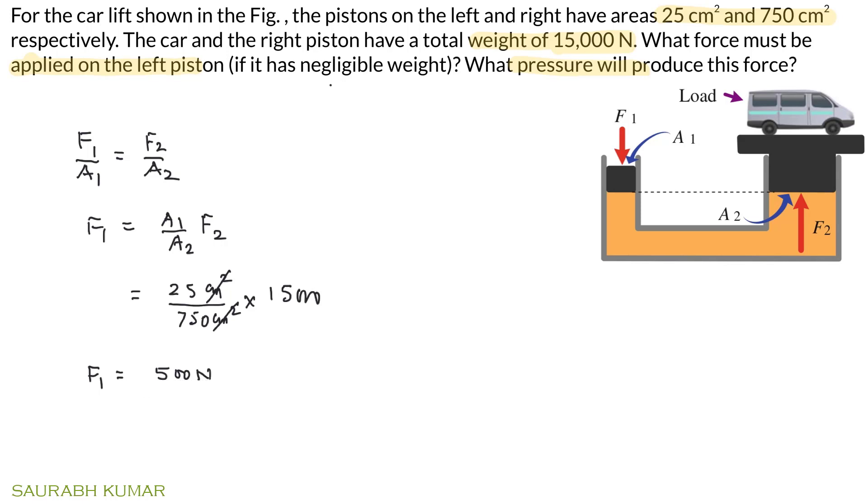As far as pressure is concerned, it is F1 by A1, equal to 500 by—now we will take area in meters squared—so 25 times 10 to the power minus 4, equal to 2 times 10 to the power 5 Pascals, or approximately 2 atmospheres.